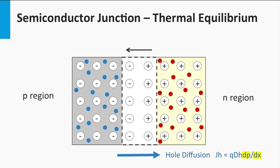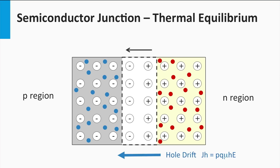Diffusion is controlled by the density of the majority charge carriers. In contrast, drift works on the minority charge carriers. The electric field forces the electrons in the p-region — where electrons are the minority charge carriers — to move back to the n-region. Similarly, the electric field forces the holes in the n-region — where holes are the minority charge carriers — to move back to the p-region. So drift is controlled by the minority charge carrier density. Increasing the drift current density can be accomplished by either increasing the minority carrier density or increasing the electric field E over the depletion zone.